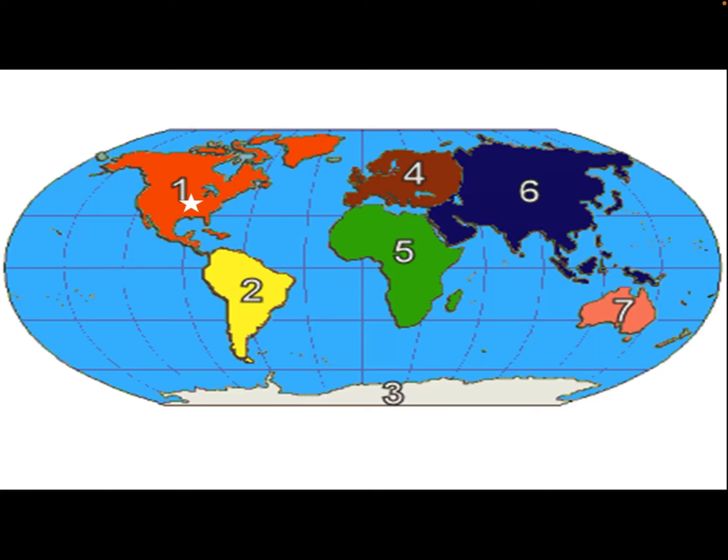Think about social studies. What do we call those major sections of land? If you said continents, you are correct. Do you see the star in the picture? That will be our continent, and the star is approximately where we live — Irving, Texas right there. Do you remember from social studies what continent we live on? Our continent not only includes the United States, it includes Canada as well. We are north of the equator, so the continent we live on is North America.